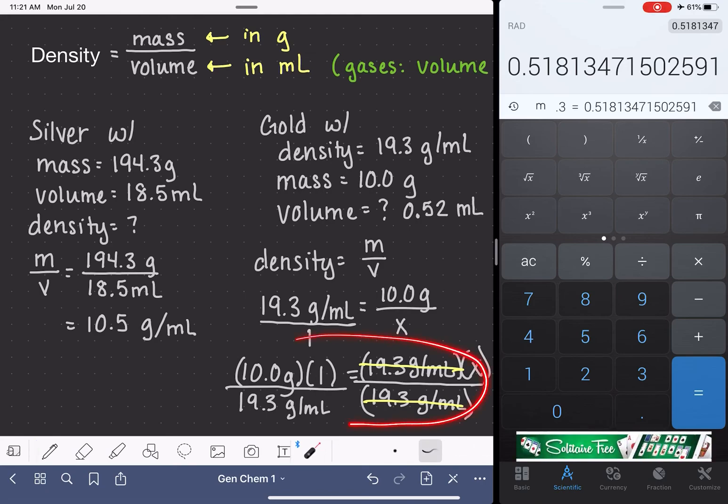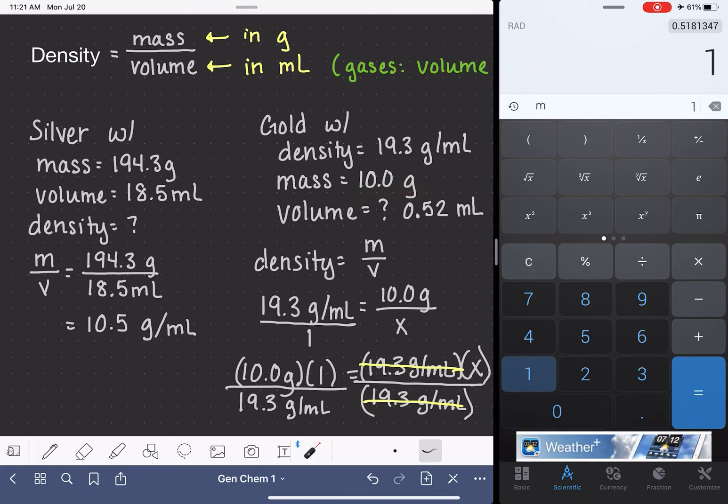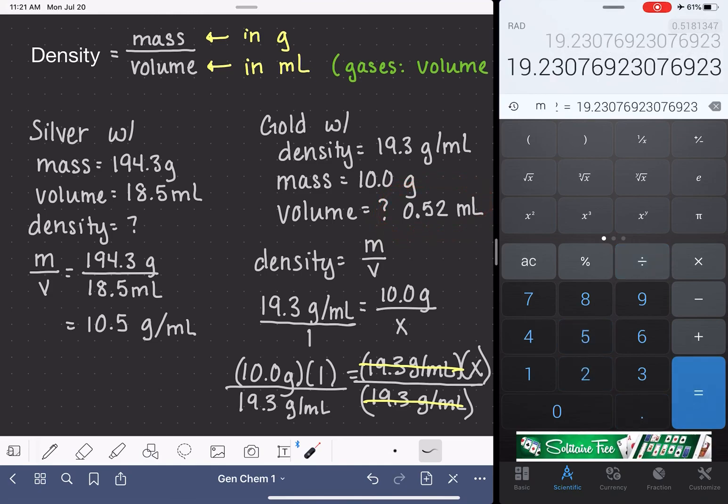If you're feeling really uncertain about this, you can always take these numbers and plug them back in to the density equation and make sure that they equal 19.3. So if we've done this correctly, the mass, 10, divided by the volume, 0.52, better equal 19.3. Close enough. We did some rounding, which is why it's off by a little bit, but it's close enough. We can feel confident that it is accurate.